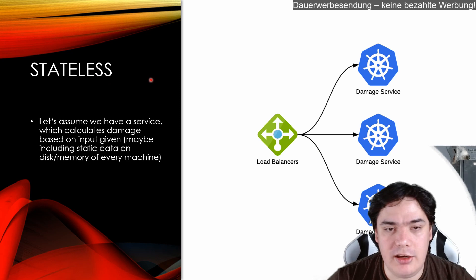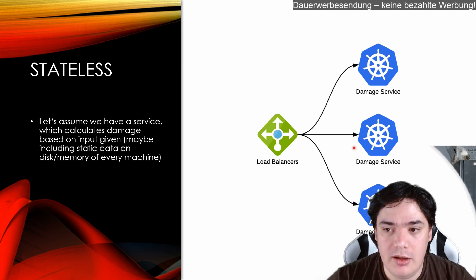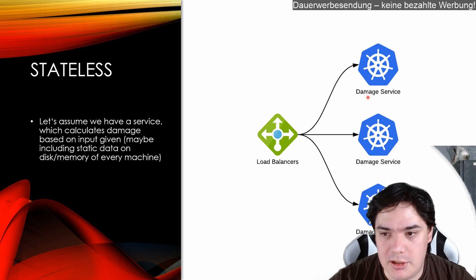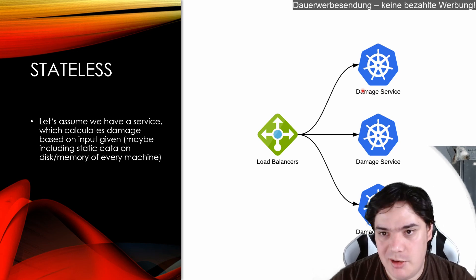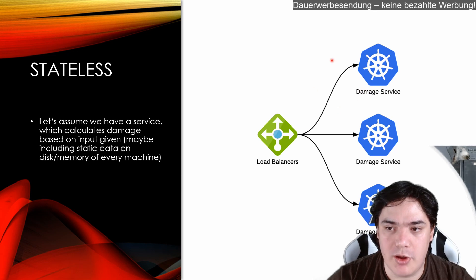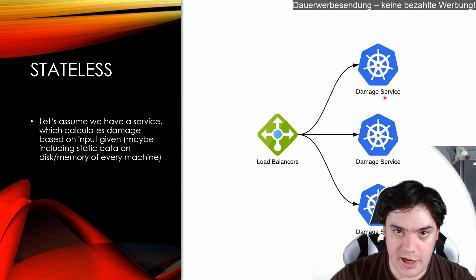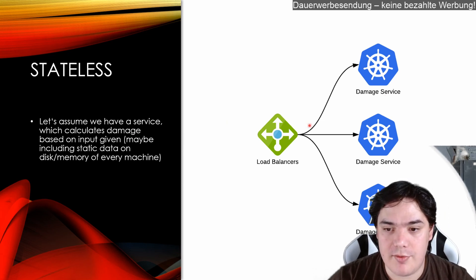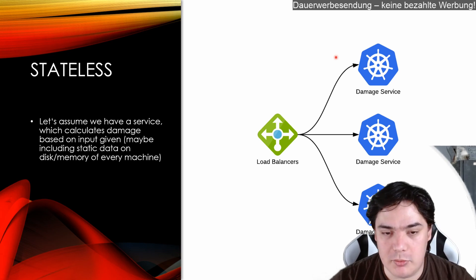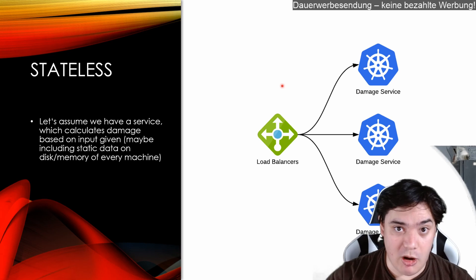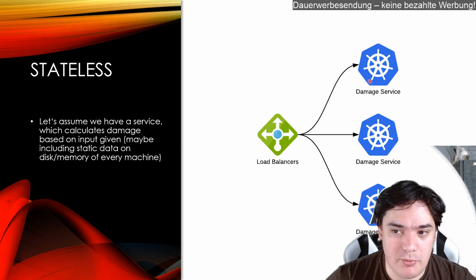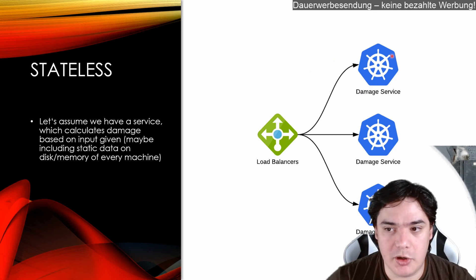The stateless strategy is the simplest strategy you can have. Let's say your service doesn't have a state it manages — which doesn't mean it can't have config files — but each service has on its disk or in memory all the data it needs, plus the request input it gets from the client. A good example is a damage calculation service: it receives armor and attack values from attacker and defender, does some fancy calculation, and outputs the damage number. Maybe it reads some configuration in memory, and when we boot the service up, everyone has that data available.